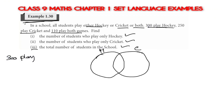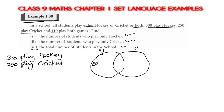300 play hockey. 250 play cricket. 110 in the intersection area.